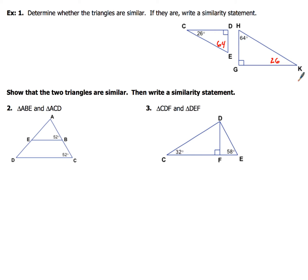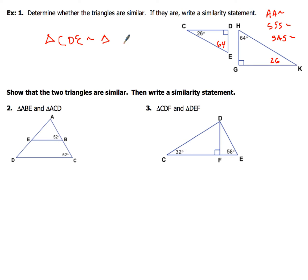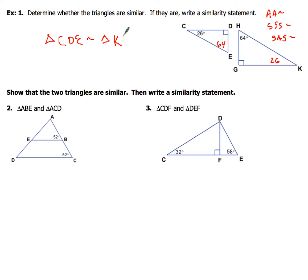I've got my pick of angles. Looking at all three similarity methods, I've got two angles that are congruent, so the triangles are going to be similar by angle-angle. My similarity statement: triangle CDE — using the similar symbol, not the congruent symbol — is similar to triangle KGH. Angle C is 26°, so K starts the second triangle; then the 90° angle G; then lastly angle H.